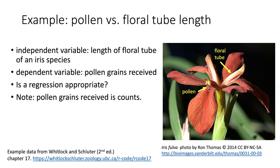It would make sense that a longer floral tube might cause the bee to have to work harder, to wiggle around more to get down deeper into the flower where the nectar reward is. And if that were the case, then it might deposit more pollen on the stigma.